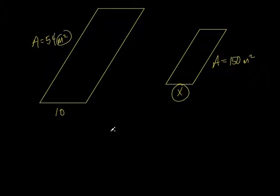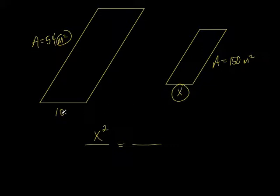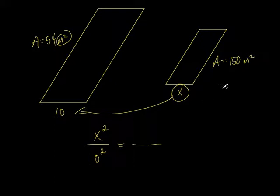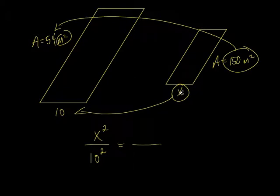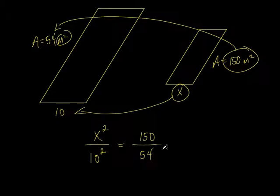Since we're solving for X, we put that on top. We set up our proportion — that's our formula. X squared over 10 squared equals the corresponding areas. I'm comparing the right to the left, so the areas go in that same order: 150 over 54. And remember, you don't square the areas — you only square the lengths of the sides.